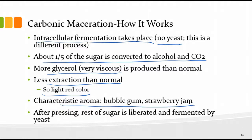The grape converts about one-fifth of the sugar to alcohol and CO₂, and also produces more glycerol. You get less extraction because the skin-juice contact is limited compared to crushed grapes. The uncrushed berries do this intracellular, intra-grape fermentation that produces the characteristic bubblegum and strawberry-jam aromas. Once that's done, you press the remaining juice out of the grape and then fermentation takes place like normal, finishing the remaining four-fifths of the sugar by normal yeast fermentation.